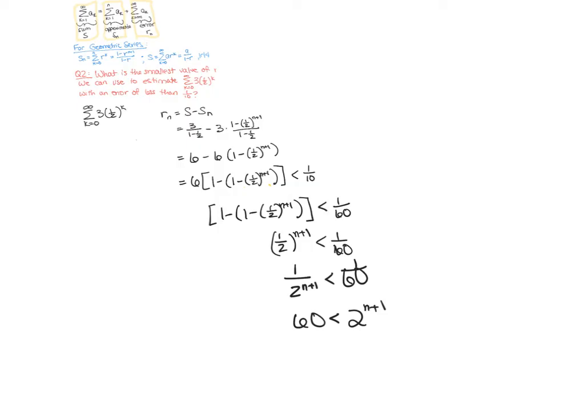Now we can start thinking about powers of two. If n is zero, then this is two to the one, which is just two. N is one, this is four. Two, this is eight. Three, sixteen. Four, thirty-two. Five, sixty-four.